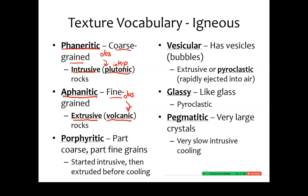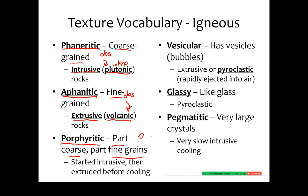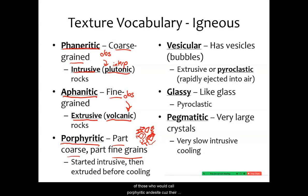That is really the overall major classification, and then the other texture types are details that can be added. Porphyritic rocks are those that are part coarse, part fine-grained — so maybe a mixture of some crystals we can see and some we can't. A lot of those pictures of andesite we saw, with light crystals sticking through and then a couple of dark crystals, we would call porphyritic andesite, because they're part coarse and part fine-grained.